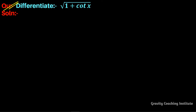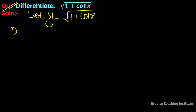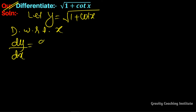Differentiate √(1 + cot x). Let y = √(1 + cot x). Now differentiate with respect to x, so dy/dx equals the derivative of √(1 + cot x).